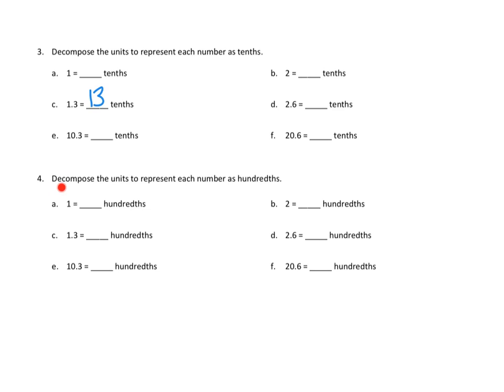And that actually makes sense. Because if someone told us we had thirteen tenths, we would go ahead and convert ten of them into a whole. So we've just done this in reverse right here. Let's take a look at number four. We're going to decompose the units to represent each number as hundredths. Well, this is just the same process. It just is one more digit to the right of the decimal. I'm going to look at 4C here. 1.3.